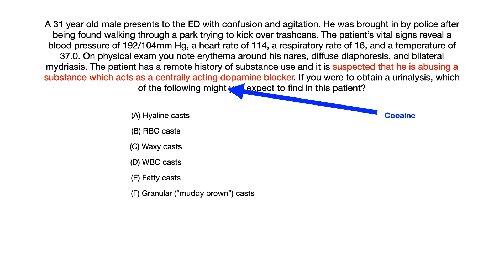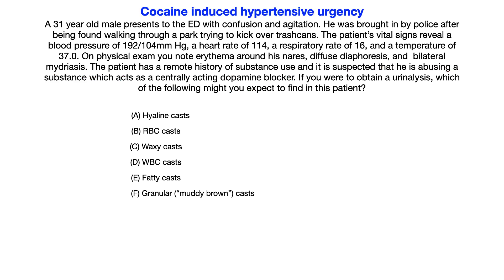Putting everything together, this patient has cocaine-induced hypertensive urgency. Given that presentation, the answer is RBC casts, because hypertensive urgency and hypertensive emergency are associated with RBC casts. In addition, RBC casts can also be found in glomerulonephritis, but that's not relevant to this question — just keep that in the back of your mind.